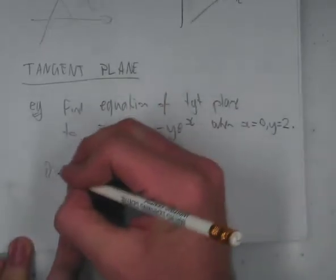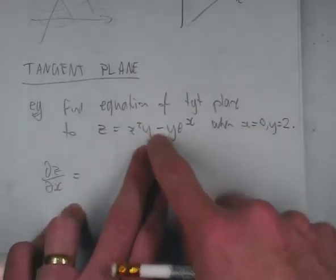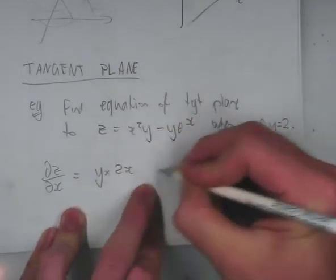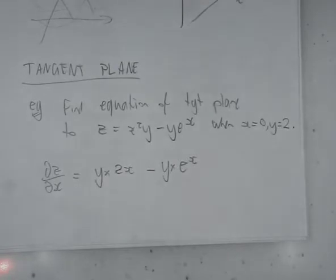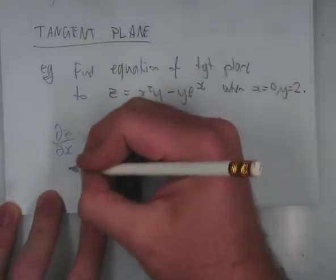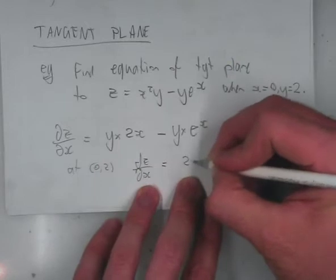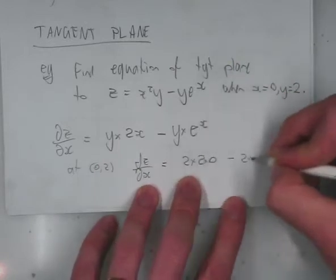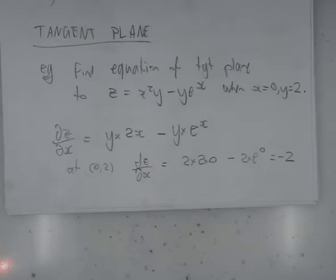First I need to find dz on dx. Since y counts as a constant here, it will still be there and I differentiate x squared to get 2x, so dz/dx equals 2xy minus ye to the x. At the point (0, 2), dz/dx equals 2 times 2 times 0 minus 2 times e to the 0, which is minus 2. So my slope in the x direction is minus 2 — for every one across I go, it will go down 2.